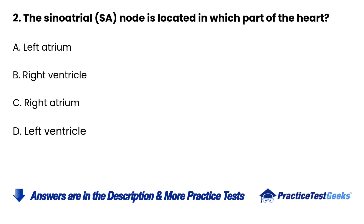Question 2. The sinoatrial (SA) node is located in which part of the heart? A. Left atrium. B. Right ventricle. C. Right atrium. D. Left ventricle.